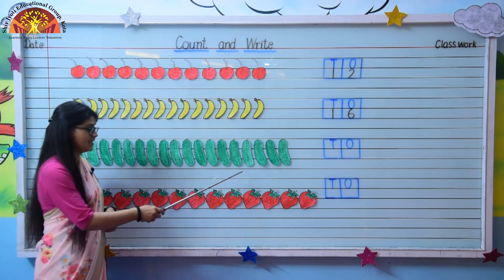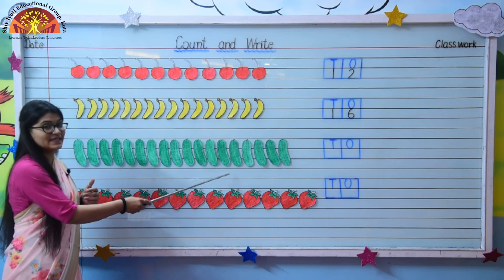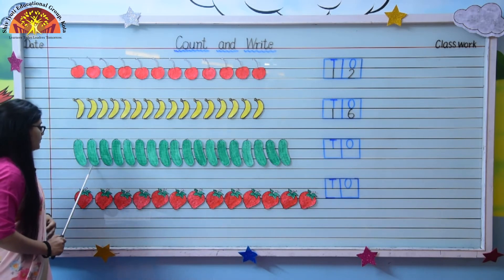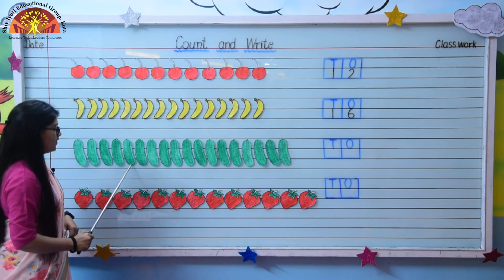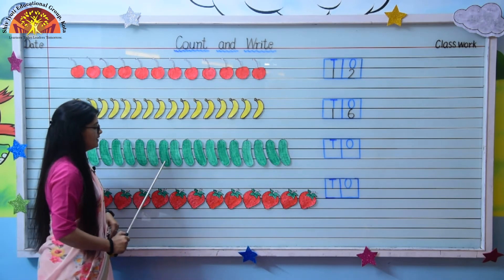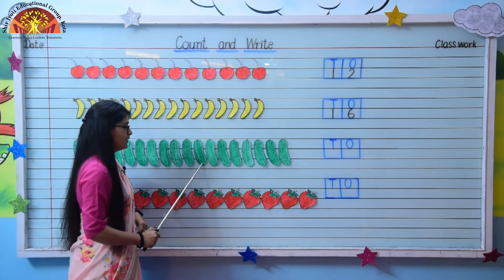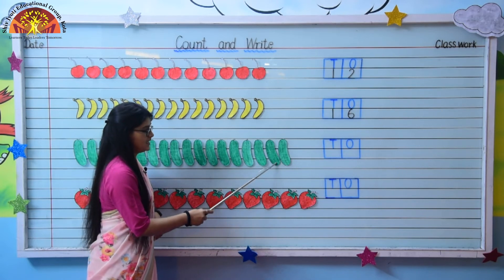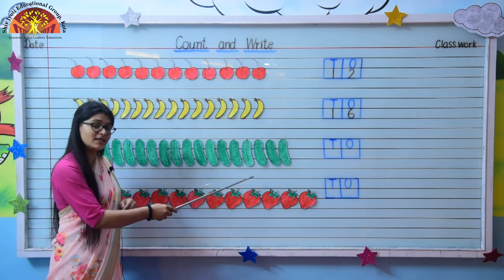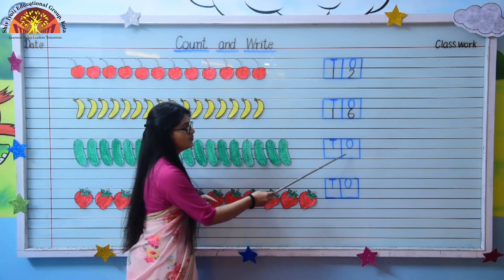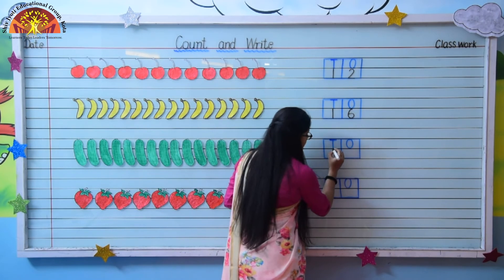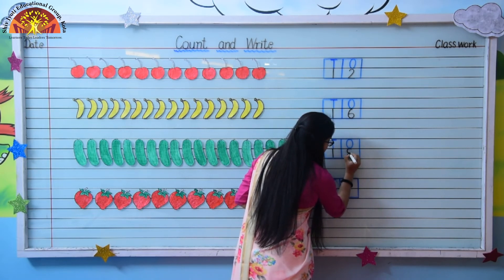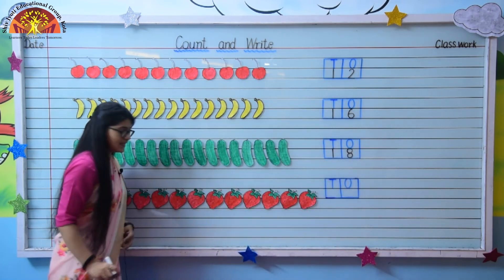Now tell me, what are these? These are cucumbers. So let's count — how many cucumbers are there? Count with me: 1, 2, 3, 4, 5, 6, 7, 8, 9, 10, 11, 12, 13, 14, 15, 16, 17, 18. There are 18 cucumbers. So we will write 18 in the box. Write it carefully — at the place of 10s we will write 1 and at the place of 1s we will write 8. 1, 8 — 18.